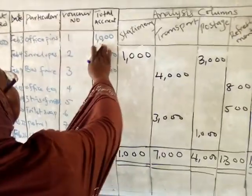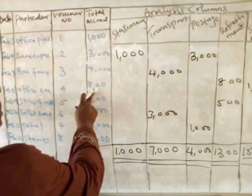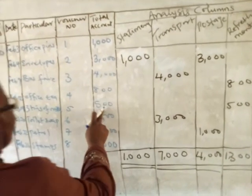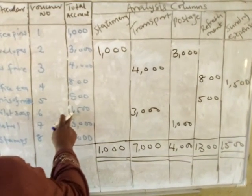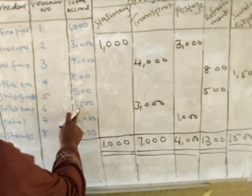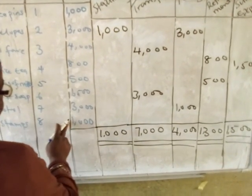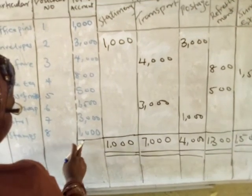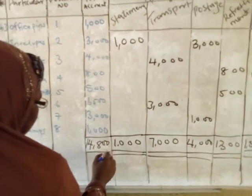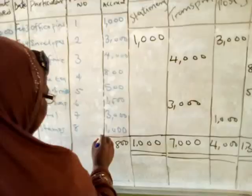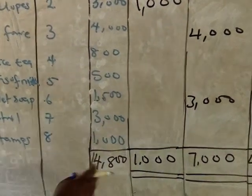Next we complete the total account column and bring down all totals. We have $1,000 plus $3,000 equals $4,000; plus $4,000 equals $8,000; plus $800 equals $8,800; plus $500 equals $9,300; plus $1,500 equals $10,800; plus $3,000 equals $13,800; plus $1,000 equals $14,800. So $14,800 is the total amount spent by the Petty Cashier out of the $18,000 given to her.